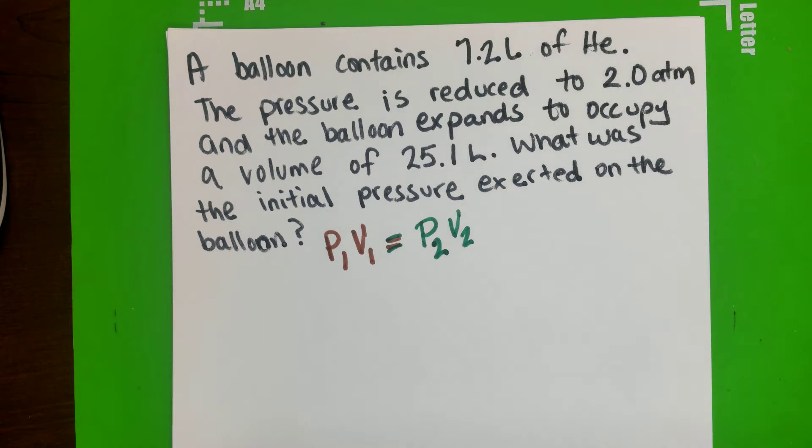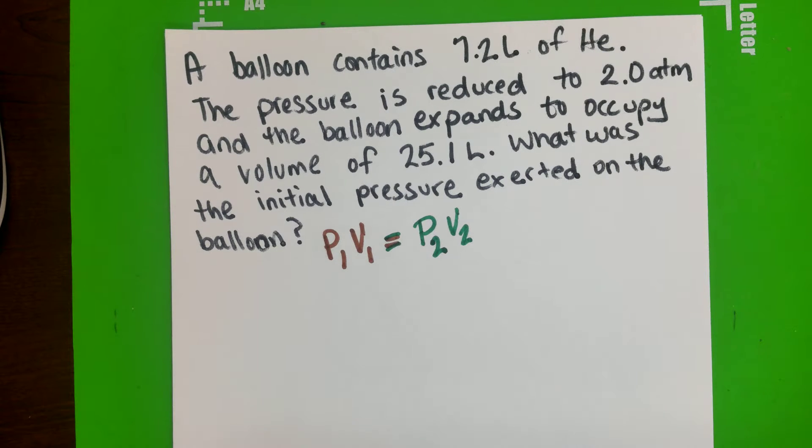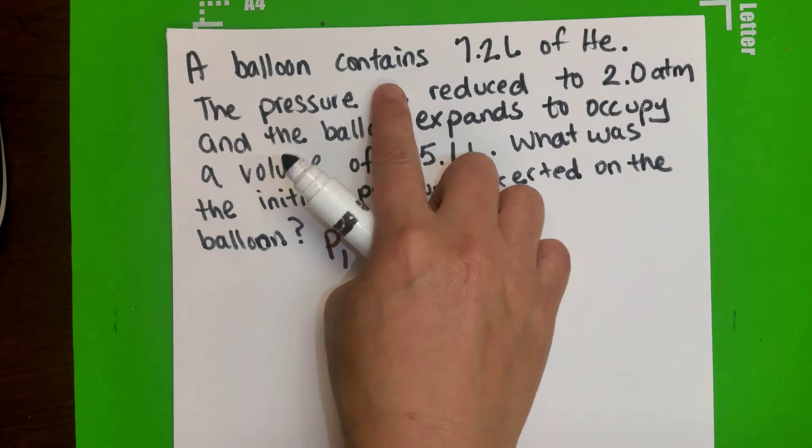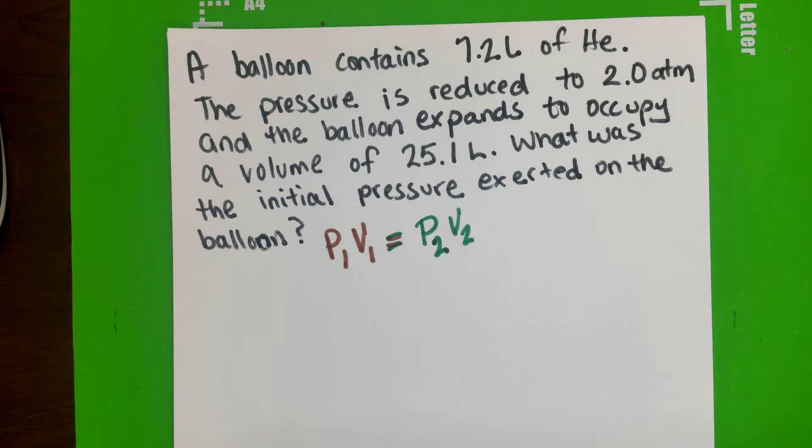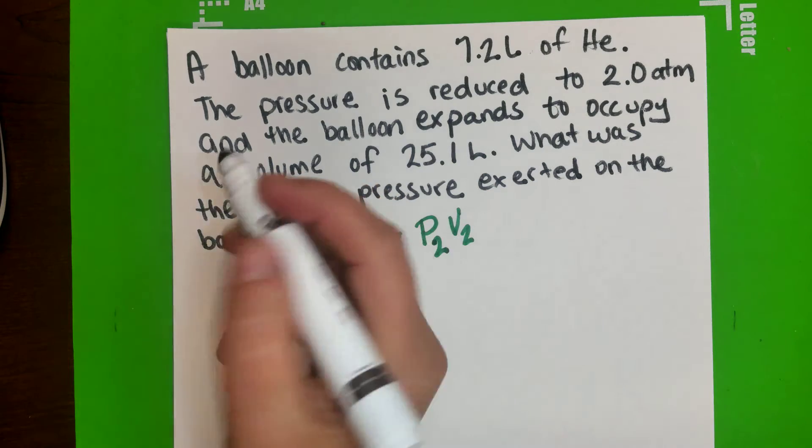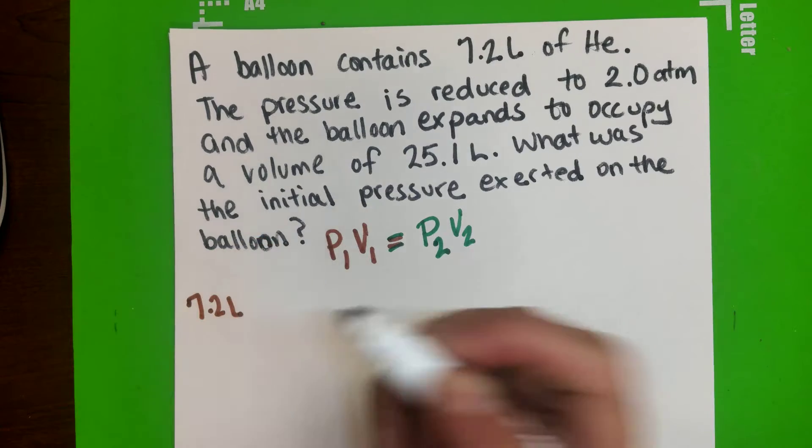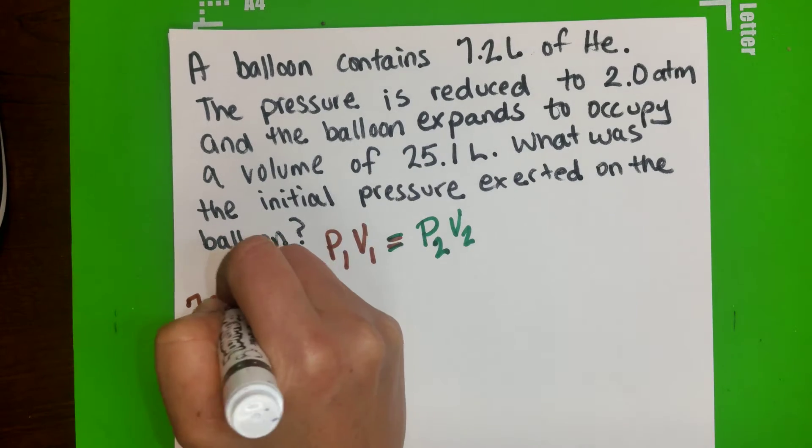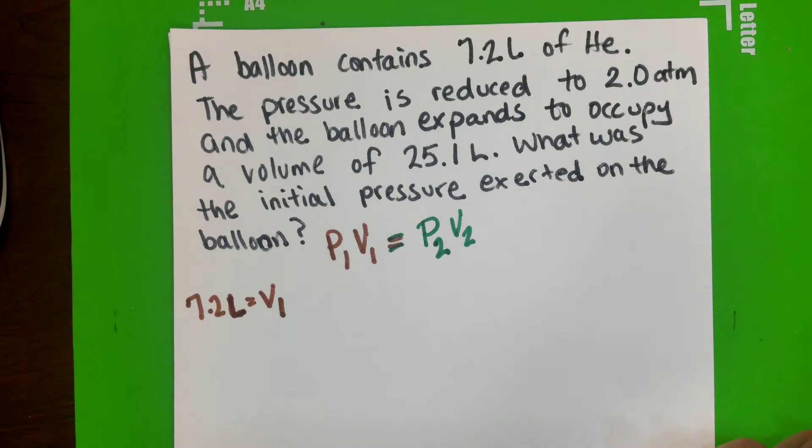So now what we're going to do is figure out which are the ones and which ones are the twos. A balloon contains 7.2 liters. So in here, that will be your V1, 7.2 liters. Liters is the volume, and that will be your initial.